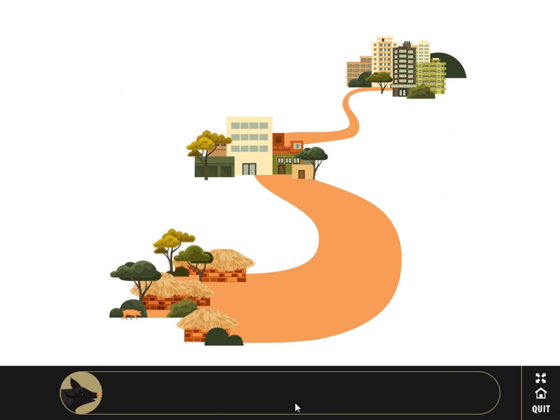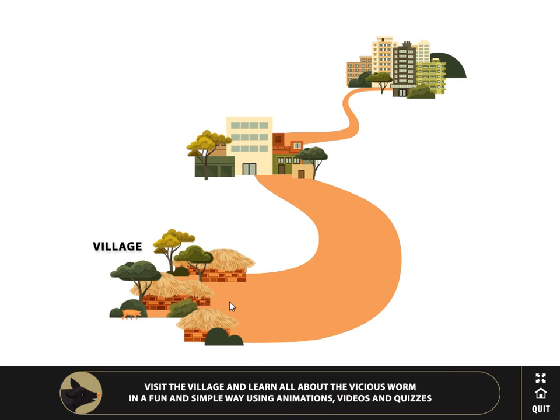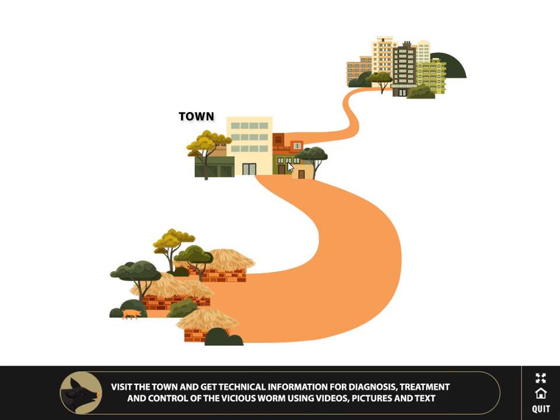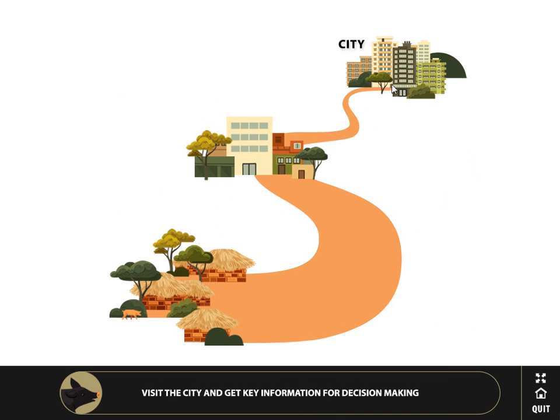The main menu is a clickable map with a village, a town and a city, to address three different levels of stakeholders.